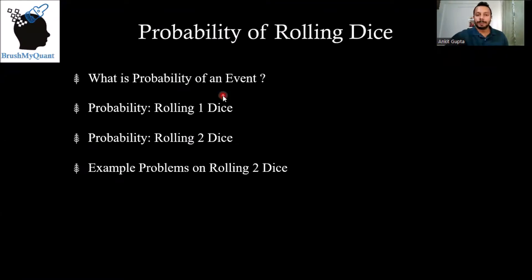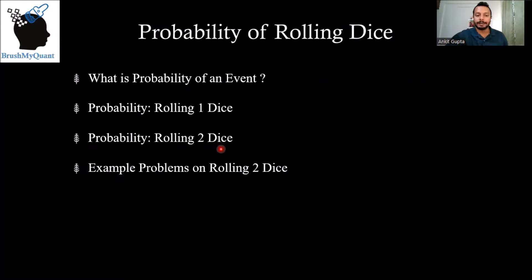We will start with understanding the definition of probability of an event. Then we'll talk about probability of rolling one dice, look at some examples, then probability of rolling two dice, and then look at some example problems on rolling two dice.